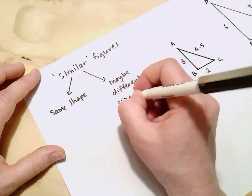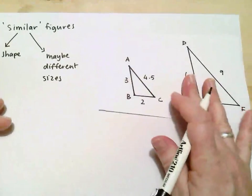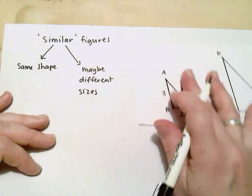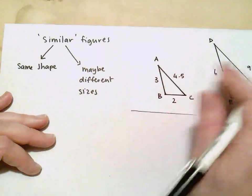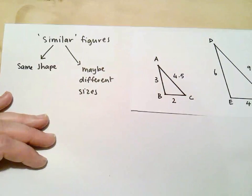So we might look at two figures like these two figures. And we might have a hunch that yeah they are similar. They look like they're the same shape but different sizes. But we have to actually be able to prove it.